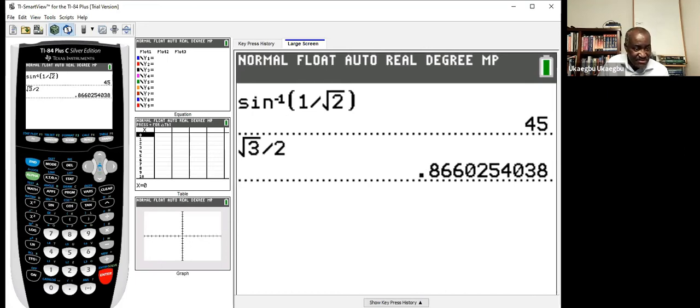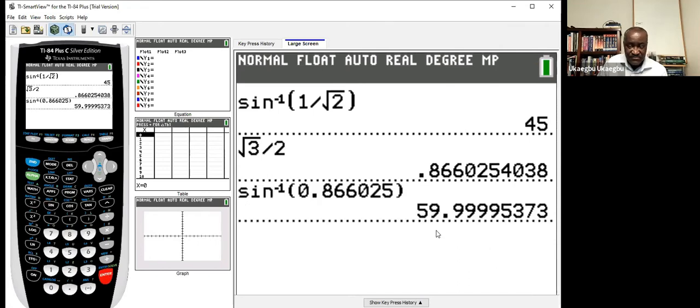So you can now do inverse sine. Is it cross or what? Okay, inverse sine. Then we enter this value. We enter 0.866025. You know, we can just call it at that point. We close it and we hit enter. That's 59.9. That's actually 60.